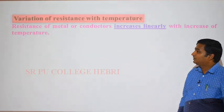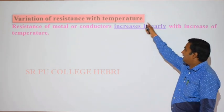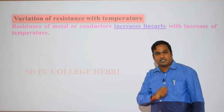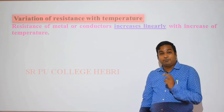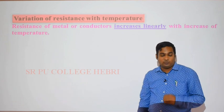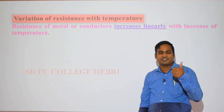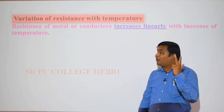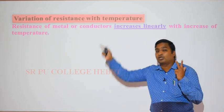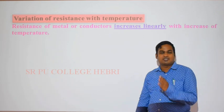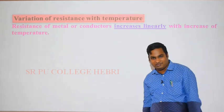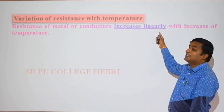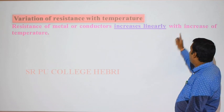The resistance of a metal or conductor increases linearly with the increase of temperature — keep that point in mind. The resistance of a metal or conductor depends on four important factors explained in the last video: length, area, temperature, and nature of the material. As temperature increases, resistance of a conductor or metal also increases linearly.